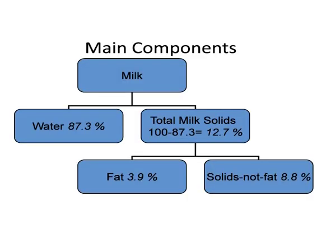Milk is defined as the secretion of the mammary glands from mammals and it is the one which exclusively sustains us for the first few months of life. Milk is chiefly composed of water, which is about 87 to 88 percent, and around 12 to 13 percent is made up of other solids.